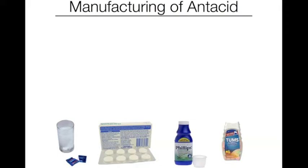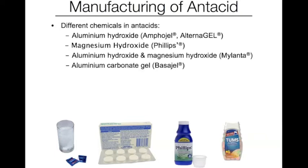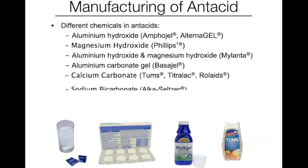Most antacids contain two or more chemicals. And these chemicals include aluminum hydroxide, magnesium hydroxide, aluminum hydroxide and magnesium hydroxide, aluminum carbonate gel, calcium carbonate, and sodium bicarbonate. These bases used as antacids range in pH from 8.5 to 10.5.